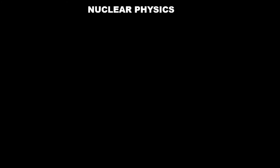Let's begin. The nucleus of an atom contains two particles known as the protons and neutrons. The protons and neutrons make up the nucleus of an atom. The protons carry a positive charge whilst the neutrons have no charge, therefore making the net charge on the nucleus of an atom positive.